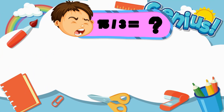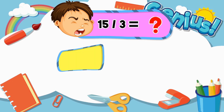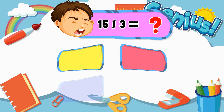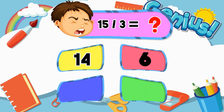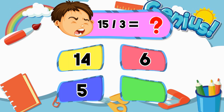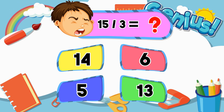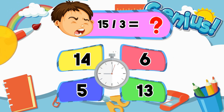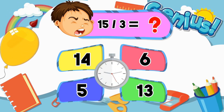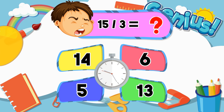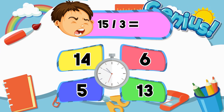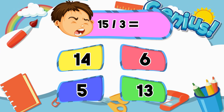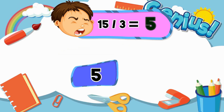What is 15 divided by 3? 14, 6, 5, 13. The answer is 5.